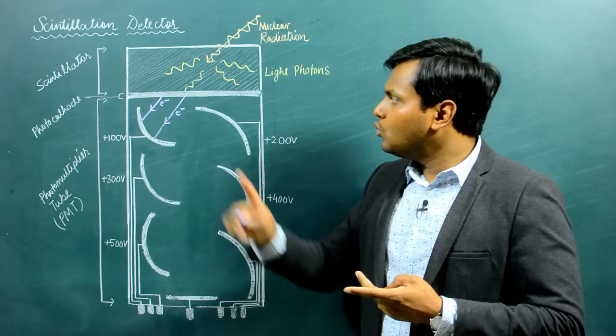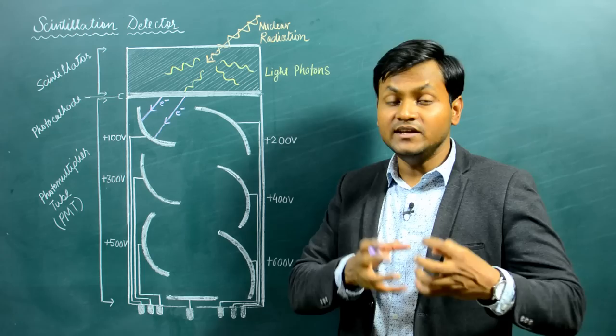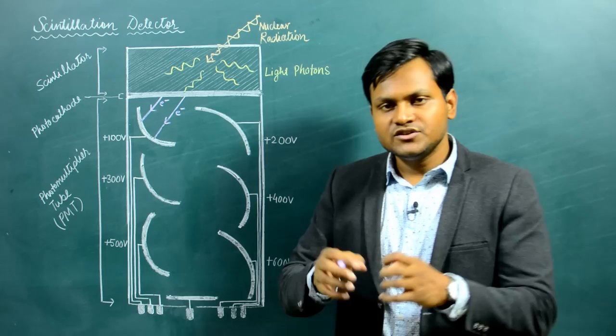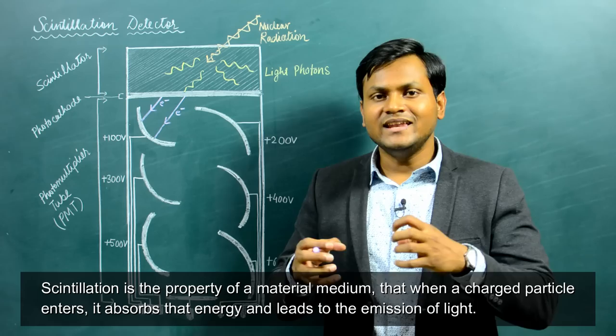What is a scintillator? A scintillator is a special kind of material medium in which if a charged particle enters, it absorbs the energy of that charged particle and leads to the creation of light. This is known as scintillation — the property of a material medium where an external charged particle's energy is absorbed and leads to the emission of light.